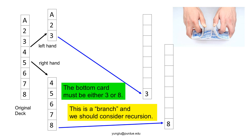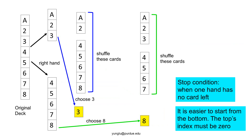After dividing the cards into two parts, we want to interleave them. The first part has three cards and the second part has five cards. The bottom card in the result can be either 3 or 8. If 3 is chosen, the problem becomes interleaving two cards with five cards. If 8 is chosen, the problem becomes interleaving three cards with four cards. Do you notice the similarity of these new problems with the original problem?